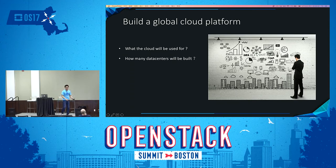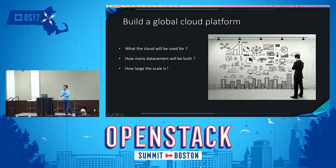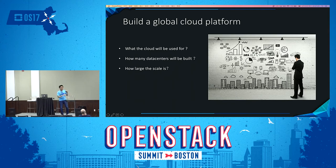How many data centers will be built? I can't tell you exactly, but these data centers will be built in China, Singapore, Dubai, and some other parts of the world. For scale, the physical CPU number will exceed about 60,000 — think about it, 60,000 physical CPUs. There will be a lot of data centers across the world.